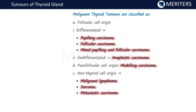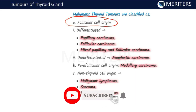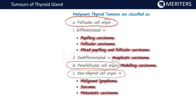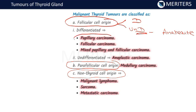The malignant thyroid tumors are classified as follicular cell origin and parafollicular cell origin, and a third category of non-thyroid cell origin. In follicular cell origin, you have differentiated and undifferentiated types. In undifferentiated, you have anaplastic carcinoma. In differentiated, you have papillary, follicular, and mixed variety — so three types are present in follicular cell origin.